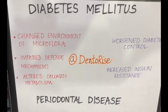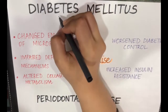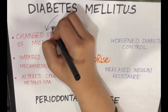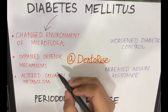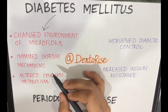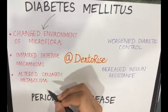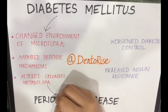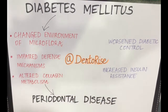Diabetes mellitus and periodontal diseases are very well interconnected. Diabetes mellitus leads to a change in the environment of microflora, i.e., increased bacterial count in the blood, impaired defense mechanisms, and altered collagen metabolism, which in turn leads to periodontal disease or worsening of periodontal disease.